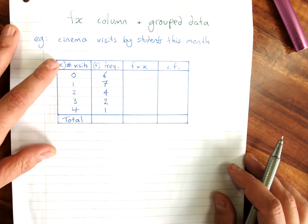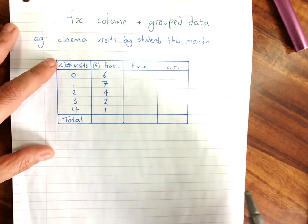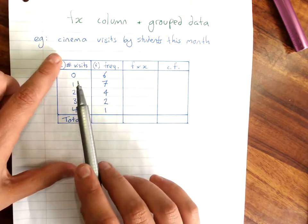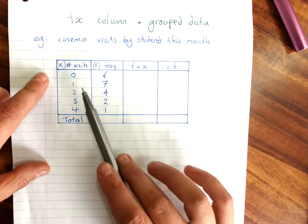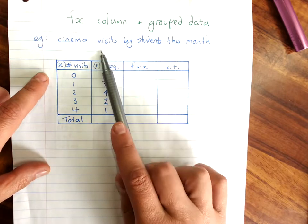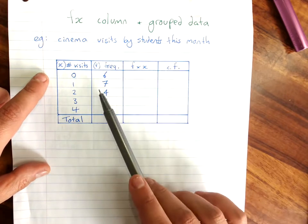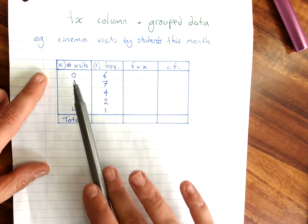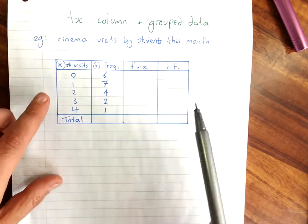Using the FX column with grouped and ungrouped data. Here I've started a frequency table ungrouped showing cinema visits by students this month. This is just to show you the use of the FX column.